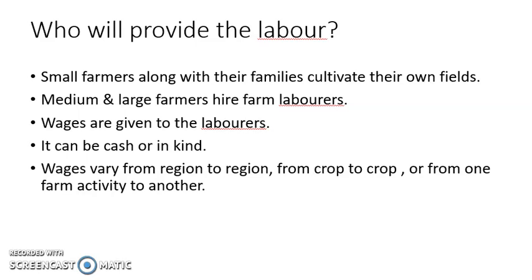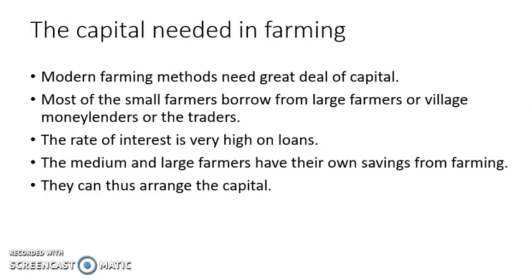Capital is yet another important factor of production. Capital is needed not only in agriculture but in every area of production. Capital means the money which we use as investment. Modern farming methods need a lot of capital — for example, plowing machines, tractors, threshers, tillers, HYV seeds, fertilizers, pesticides, and irrigation techniques all require a high amount of capital.